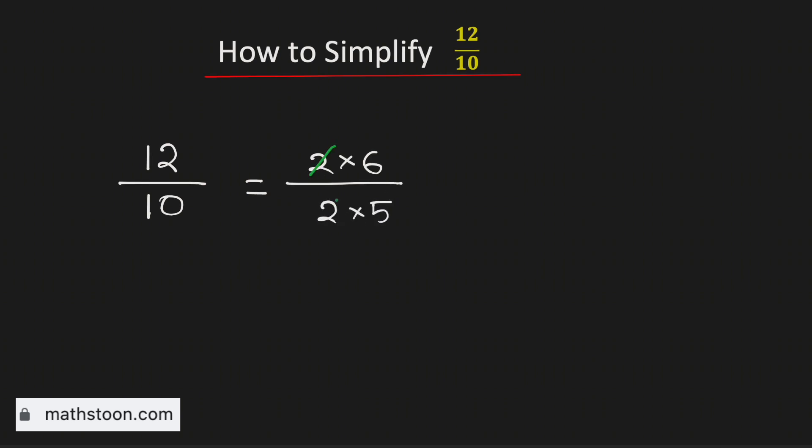Now we can cancel this common 2, and it is now equal to 6 over 5.